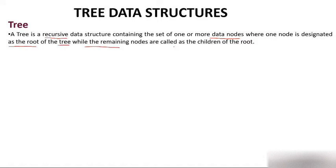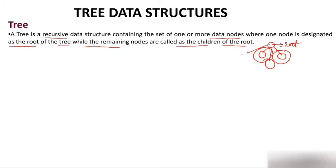While the remaining nodes are called the children of the root. So it's a kind of data structure where the topmost node is called the root, and the nodes below it are called its children. It could have multiple children — this is called root, and all those below are called its children.